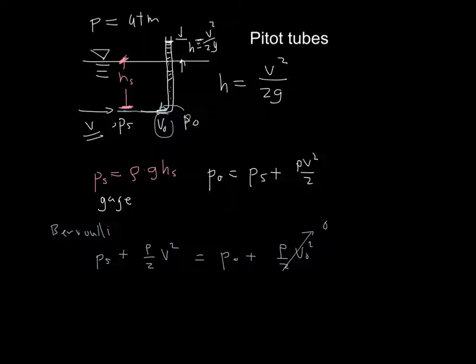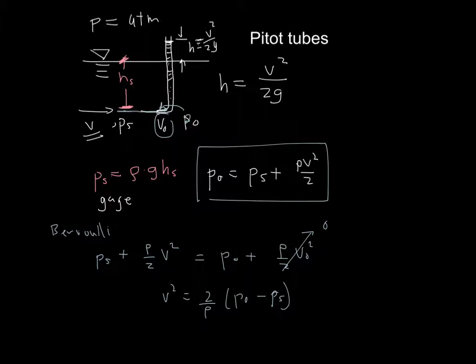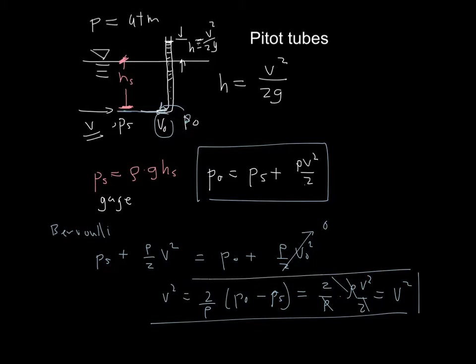Here we know that PS minus P naught—let me rewrite it. Solving for the velocity, V squared is equal to two over rho times P naught minus PS. You'll see in this equation that P naught equals PS plus this term, so this term just ends up being two over rho times rho V squared over two. We drop these out, and V squared equals V squared—it's the trivial answer, but I just wanted to show you that these relationships hold if you're using the Bernoulli equation as well.